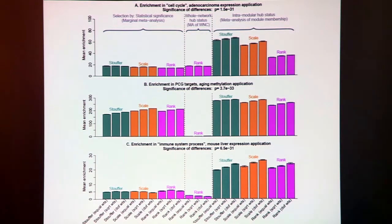Here are the results. The left panel of each figure shows the mean enrichments for different standard marginal approaches that focus on one gene at a time. The middle panel shows the enrichment for genes that were selected according to their whole network status. The right panel shows results for genes selected based on intramodular connectivity.